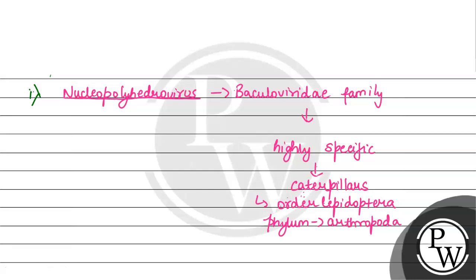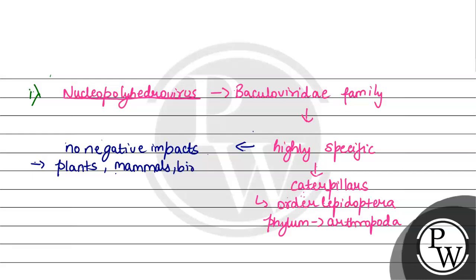NPV viruses are very specific, and they have been shown to have no negative impact on other non-target things. They do not harm plants, mammals, birds, or even fishes. Those who are not targets are not harmed, so non-target species are harmless from NPVs, which only target those specific insects and pests.